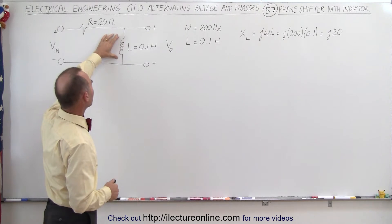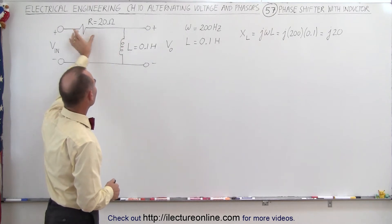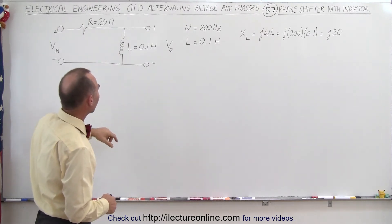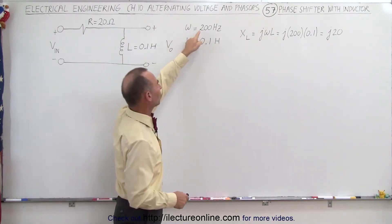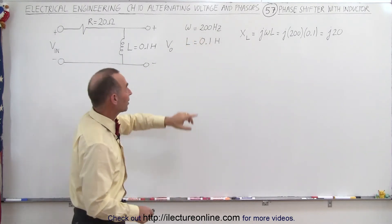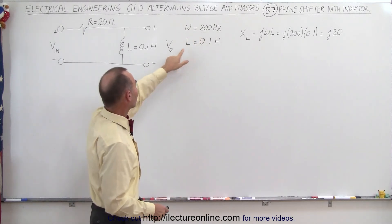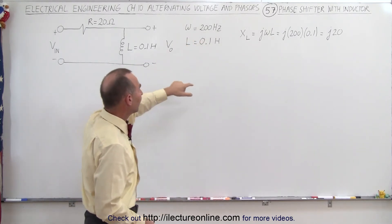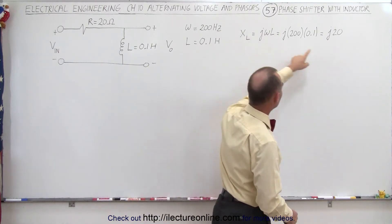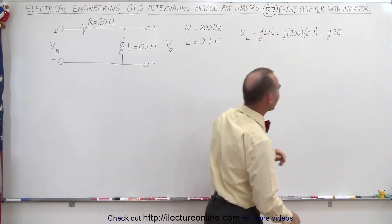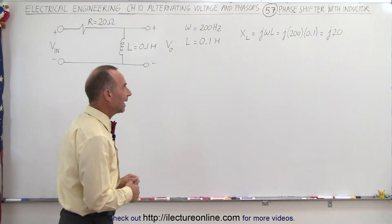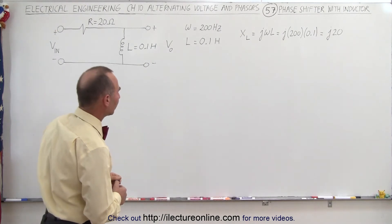When we put an inductor over here and a resistor over here, notice that if the frequency is 200 hertz — and we're talking about the angular frequency here — and the inductor is 0.1 henrys, then the reactance across the inductor will be J20, that is 20 ohms in the positive 90-degree direction.